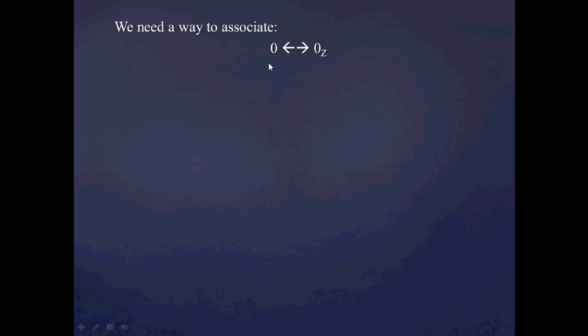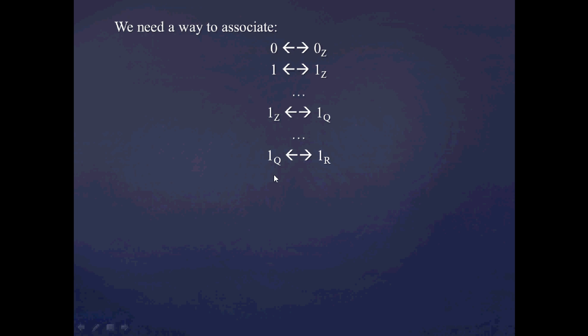This is the idea I'd like to explore in this video — the correspondence between these objects. Essentially, what we need to do is associate a member of one set, for example the natural numbers, to some corresponding element in, for example, the integers. We'd want to associate the natural number 0 to the integer 0, and the natural number 1 to the integer 1, and so on. Furthermore, as we proceed up the hierarchy, we'd associate the integer 1 to the rational number 1, and eventually the rational number 1 to the real number 1. A good way to do this would be to set up an injective function. The reason it must be injective is so that we can go in the reverse direction uniquely.